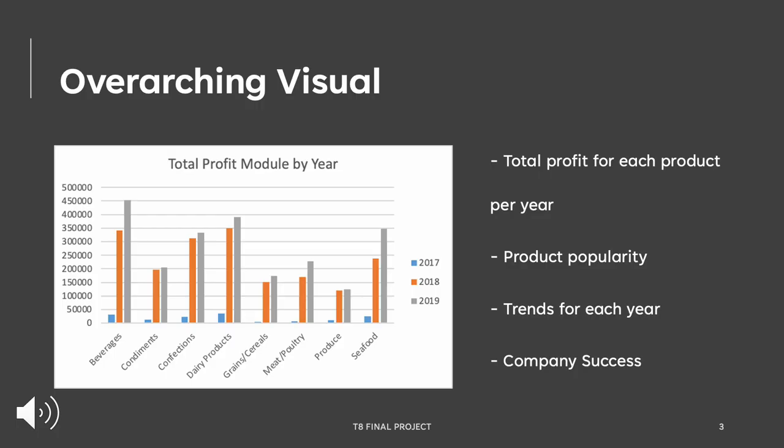Team 8 created an overarching visual of the total profit module by year. It shows the total profit for each product by year, including the years 2017 to 2019. It shows each product's popularity per year and indicates the trends for each year and the company's overall success. It also shows how the company's profits increased from 2017 to 2019 and how the patterns of popularity changed.